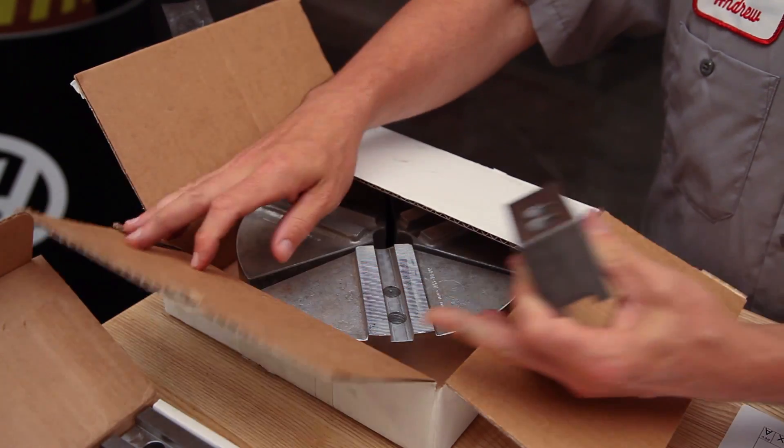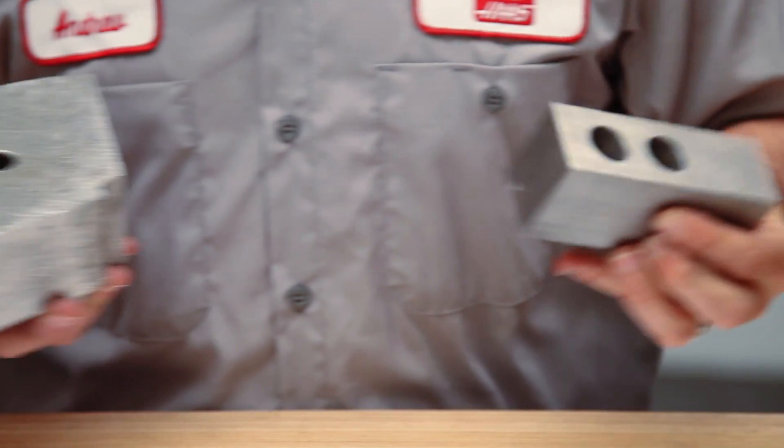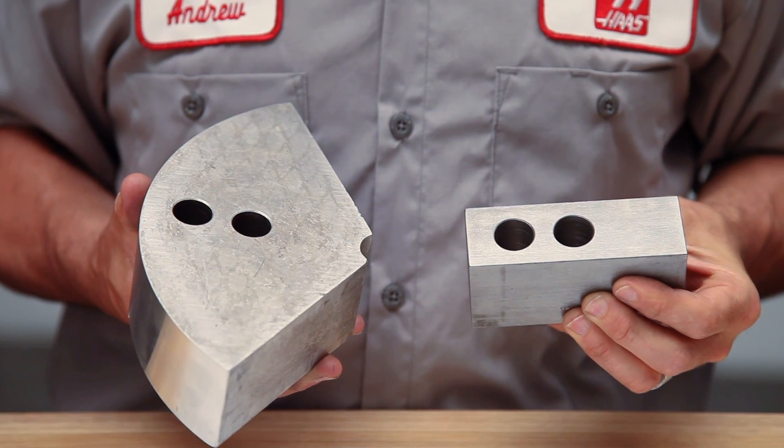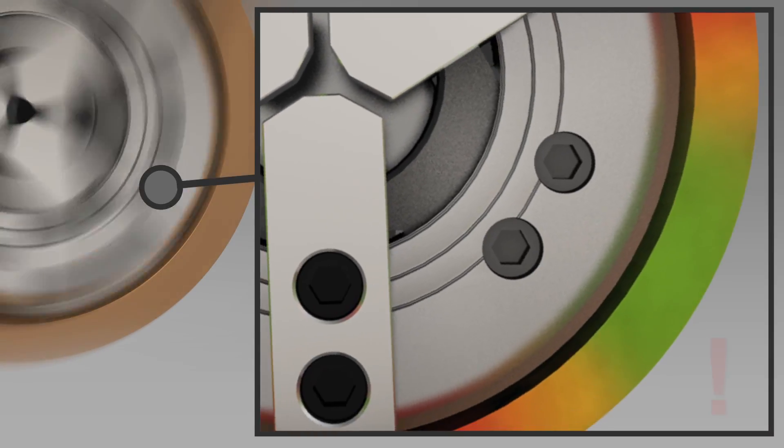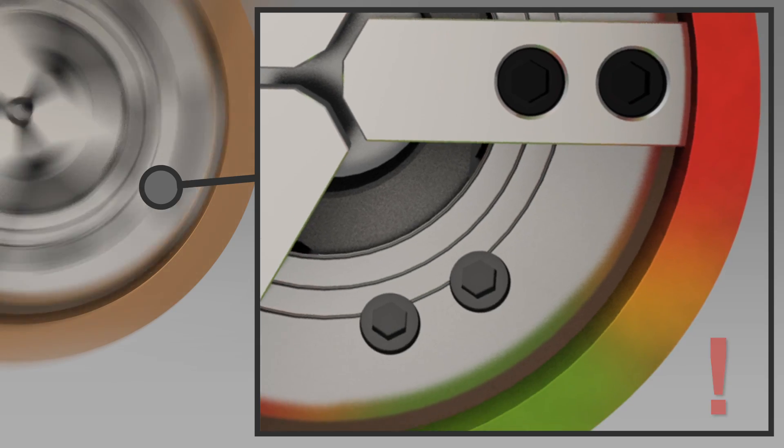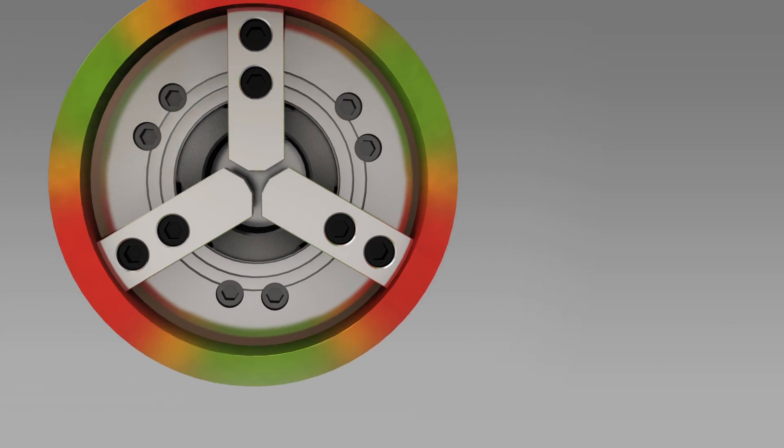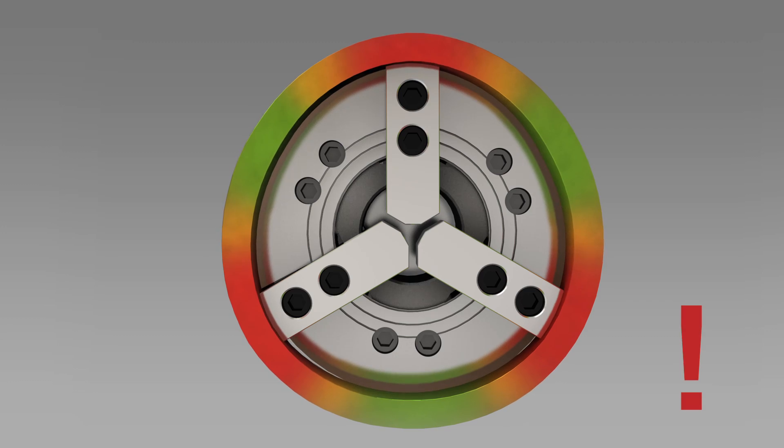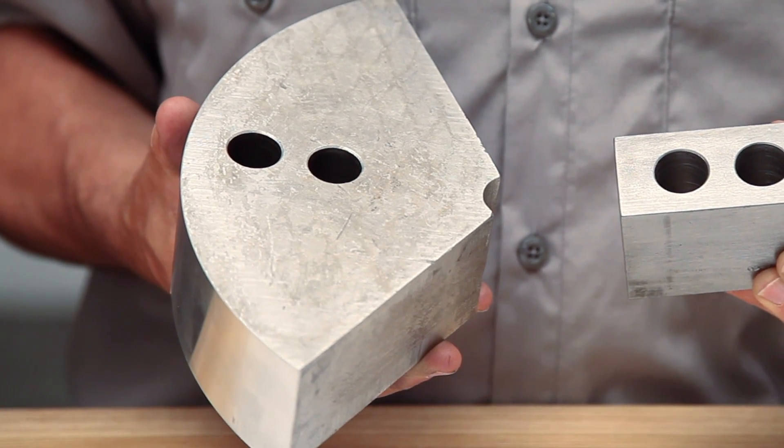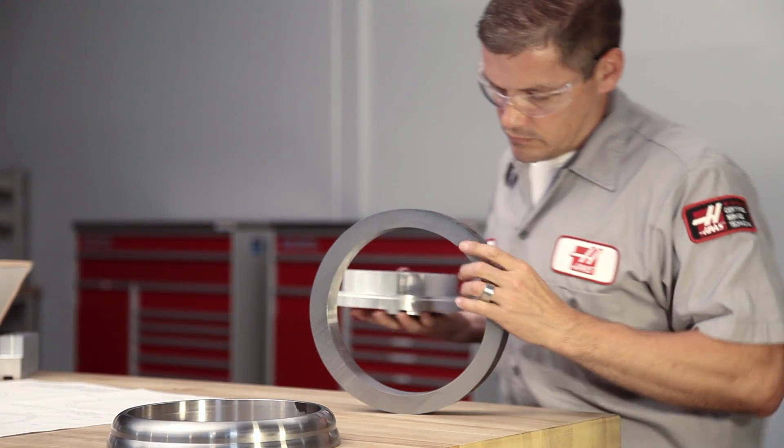Andrew is considering whether to use standard soft jaws or pie jaws to ID grip this part. If he were to use regular soft jaws to hold this thin walled part, at higher holding pressures, the ring would begin to distort during clamping. Pie jaws allow this part to be clamped in a more robust and consistent manner.